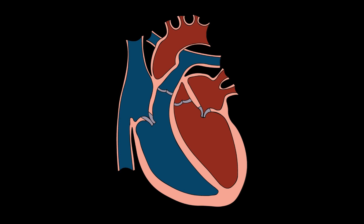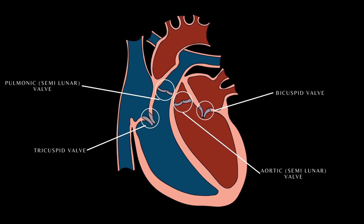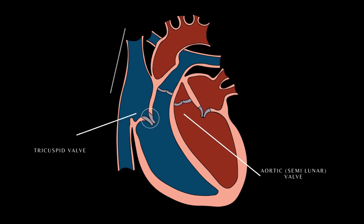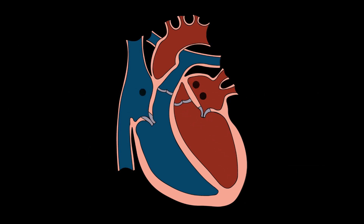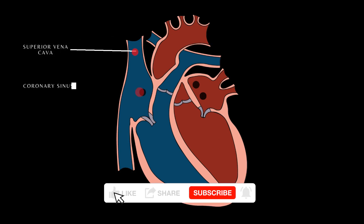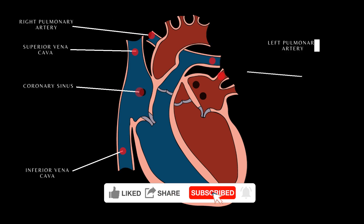There are also 4 valves that prevent the backflow of blood: the bicuspid and tricuspid atrioventricular valves, and the pulmonic and aortic semilunar valves. Other structures include the superior and inferior vena cava, and the opening of the coronary sinus, the pulmonary arteries and veins, and the aorta.